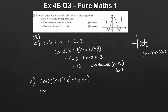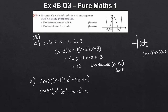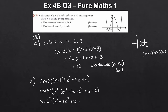Now multiply (x+1) by (x²−5x+6): x times every term gives x³−5x²+6x, and then 1 times every term gives x²−5x+6. Combining those, and then we have (x+2) times the resulting cubic, so we simplify to get x³−4x²+x+6.